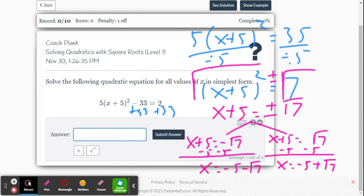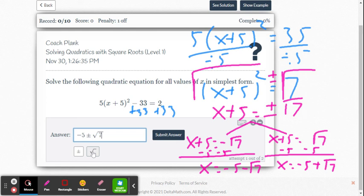So we're going to say we want it to be negative 5 plus, we can do the plus minus, so we can do both at the same time, square root of 7. Right, this is saying negative 5 plus the square root of 7, and the other one is negative 5 minus the square root of 7.